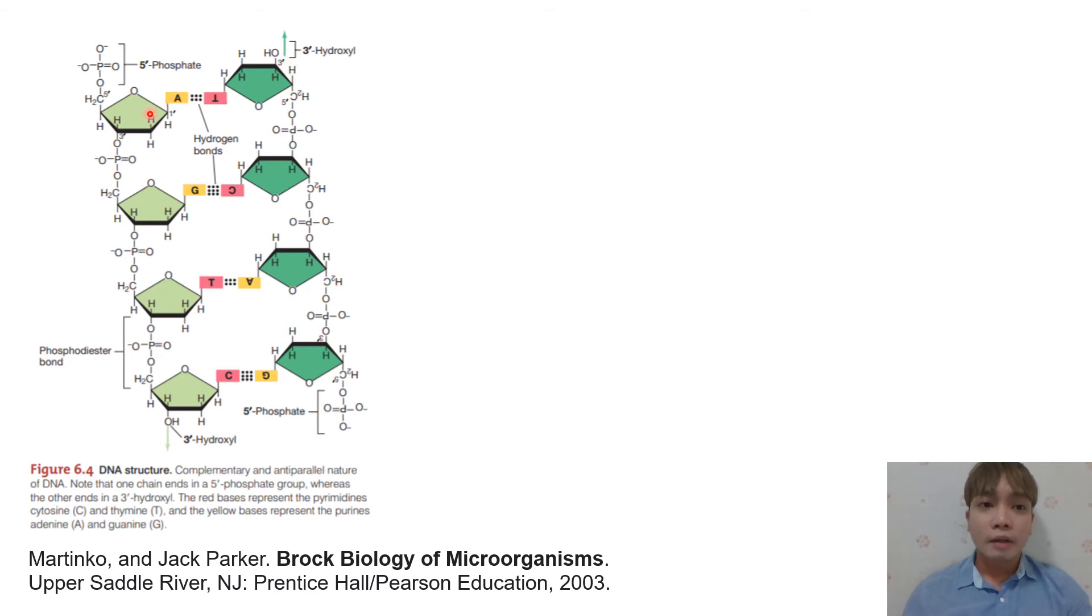So at carbon number five, remember we have phosphate group. So that's the phosphate group attached to carbon number five. That's why that's the 5' prime. And then, this last sugar of the strand, we have the exposed OH part of carbon number three, which is the hydroxyl group. So 5 going to 3. So 5' to the 3' end.